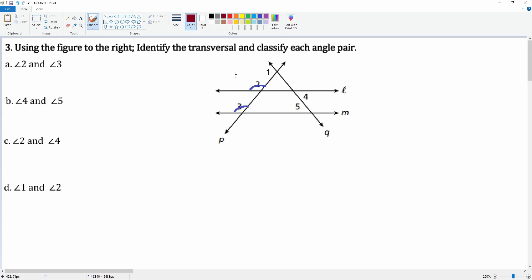The parallel lines would be this line and this line. The transversal is what is cutting through both of them, so we can say line p would be the transversal line. And the relationship is that these are corresponding pairs.